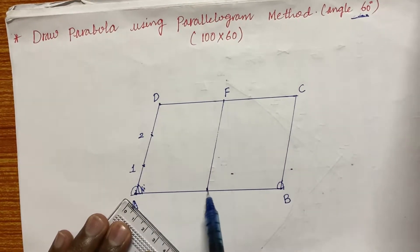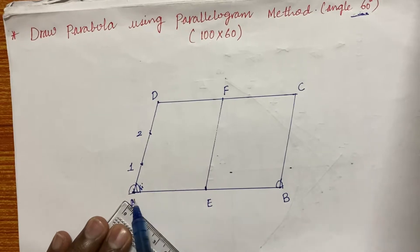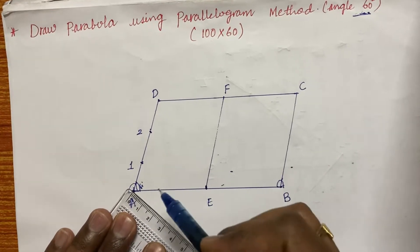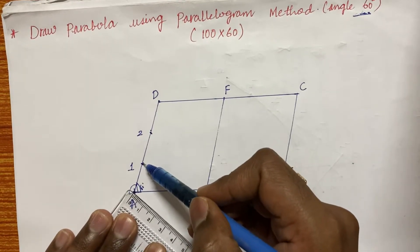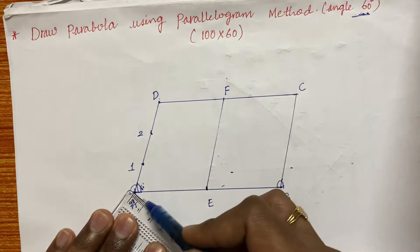Later, AE line also to be divided into equal number of divisions. So AE is how much? 50. So how many divisions we have done? Three divisions. 1, 2 and 3.